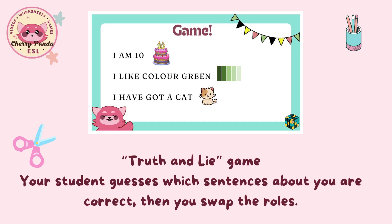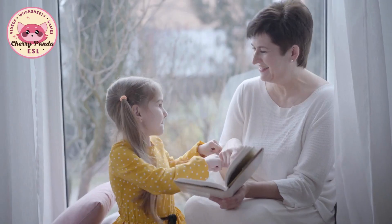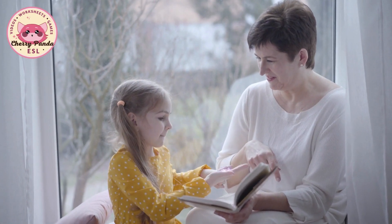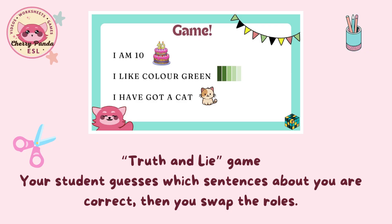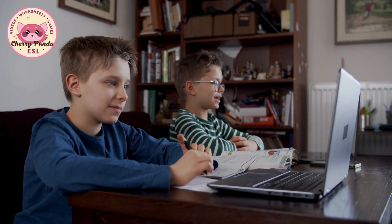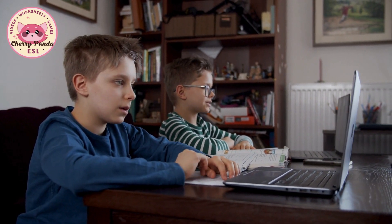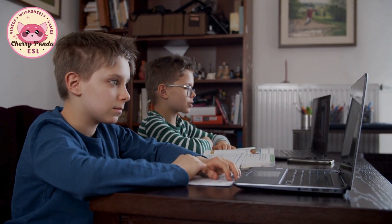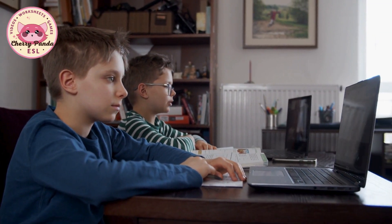Next we play an icebreaker game. I explain the rules in the student's native language and present them with three sentences about me — some are true and some aren't. The student guesses which ones are true and then we swap roles. The sentences should be basic but include different constructions. I don't restrict students to certain constructions when we swap roles and encourage them to say what they can.